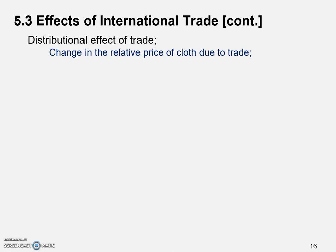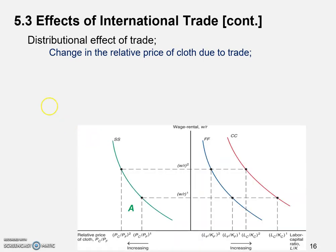We start with the change in relative price of cloth to food because of international trade, using the same graphical tool we used before. We focused on the home economy, starting from point A — that's where the home economy was before trade. When home and foreign open up their doors to each other, home is going to export cloth because cloth production is labor-intensive and home is abundant in labor.